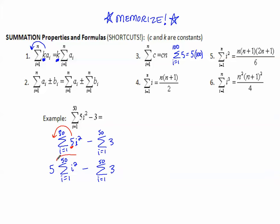Then I'm going to use the formula for i squared, and that's number 5 right here. N being the upper limit, so n is 50 times 50 plus 1 times 2 times 50 plus 1 as the numerator, all divided by 6. Don't forget about the 5 that we factored out. And then the constant property—that's 3 times 50.